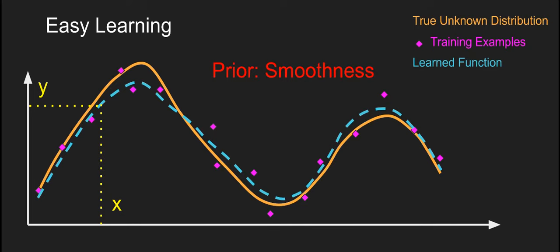We can predict this continuous variable Y given X because we've learned this function from data — it's not perfect, but it's close enough. Easy learning works because the data covers the variation in the actual true distribution. What allowed us to do this? The algorithm assumes smoothness: if X is approximately equal to Y, then f(X) is approximately equal to f(Y). It works because we have enough points to capture all the variation.